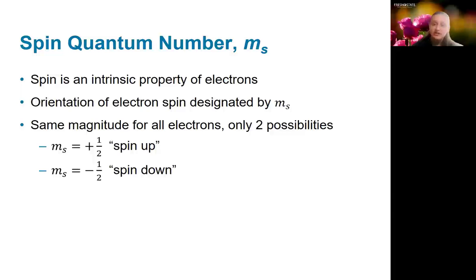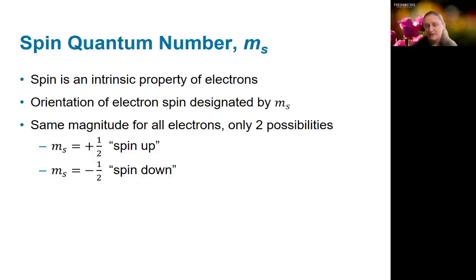In order to distinguish which electron we're talking about, we need to be able to talk about its spin. Spin is really an intrinsic property of electrons — it helps sometimes to think of it like a top spinning, but that's not quite accurate; it's just a property that it has. There are only two possible values of spin: spin up or spin down. We designate those with a quantum number called m_s, which has a value of either +1/2 for spin up or −1/2 for spin down.